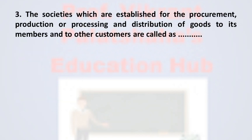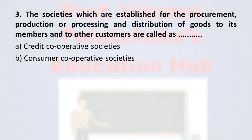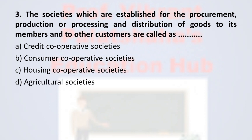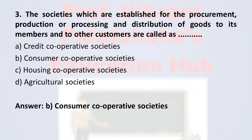Question number 3: The societies which are established for the procurement, production or processing and distribution of goods to its members and to other customers are called as ___. Option A: credit cooperative societies. Option B: consumer cooperative societies. Option C: housing cooperative societies. Option D: agricultural societies. The correct option is option B, consumer cooperative societies. Therefore, the correct option is option B.